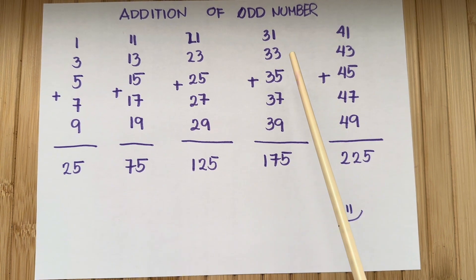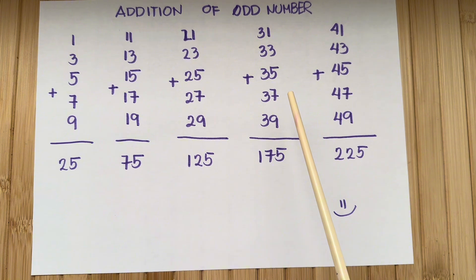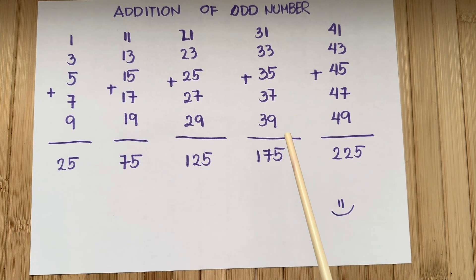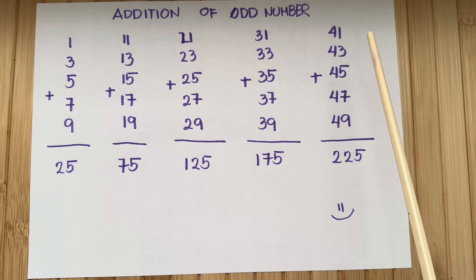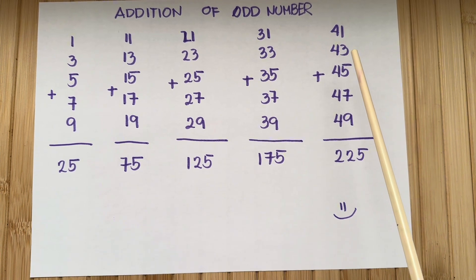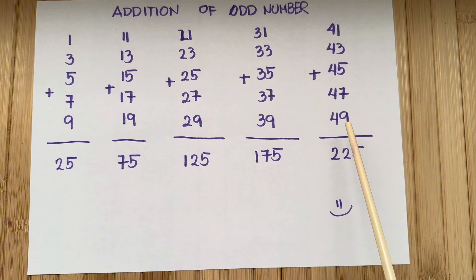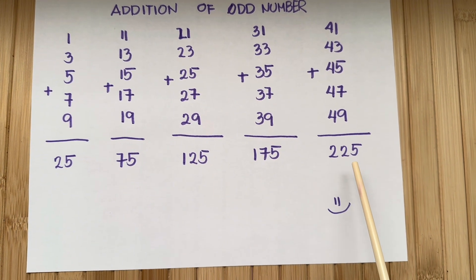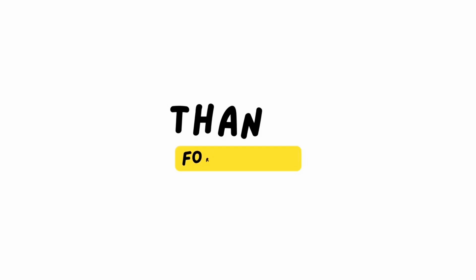31 plus 33 plus 35 plus 37 plus 39 is equals to 175, and lastly, 41 plus 43 plus 45 plus 47 plus 49 is equals to 225.